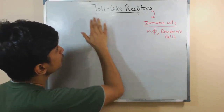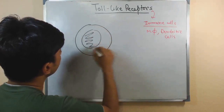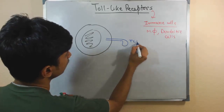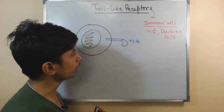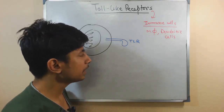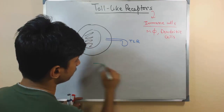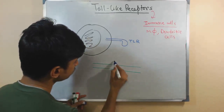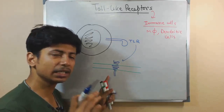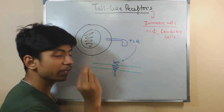These immune cells have Toll-like receptors on their surface. If I draw a macrophage here, this is the macrophage, and it has a Toll-like receptor — let's say this is the TLR. Similarly, macrophages can have different types of Toll-like receptors, and dendritic cells have different types as well. The TLR is a very specific type of receptor — it is a single membrane-spanning protein, meaning it spans the membrane only once.